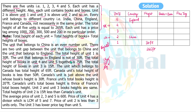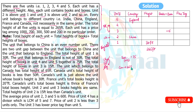The total height of books in units four and five is 75 feet. The total height of boxes in unit three is 15 feet. The unit belonging to Canada has a total height of 65 feet — so Canada can be unit three or unit four. Canada's total books height is less than 50 feet.